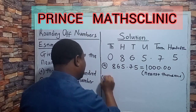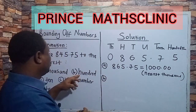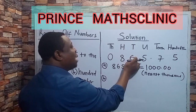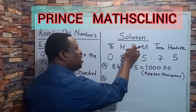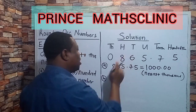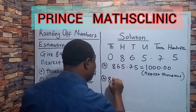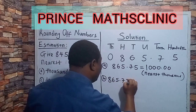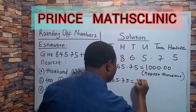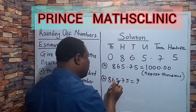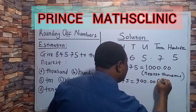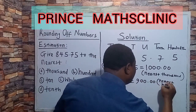The next part says to round to the nearest hundred. This is the hundreds place, so you look at the number after it — is it up to 5 or above? Yes. So you change it to 1 and add it to the hundreds. Therefore, 865.75 becomes 900.00. This is the nearest hundred.